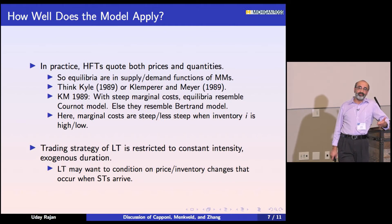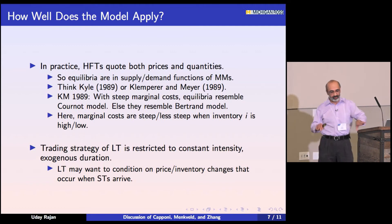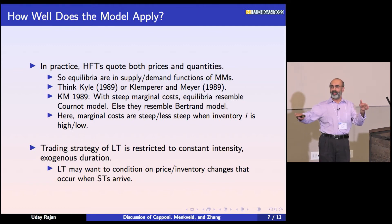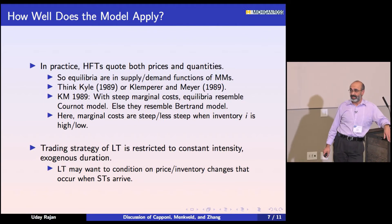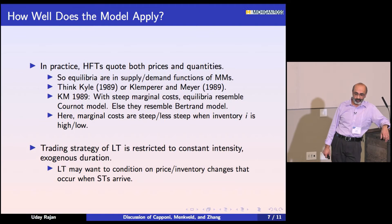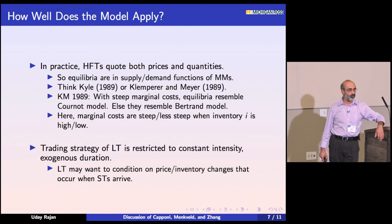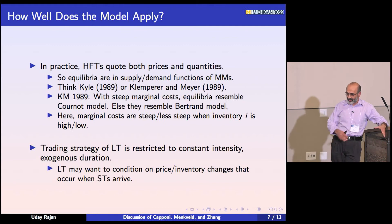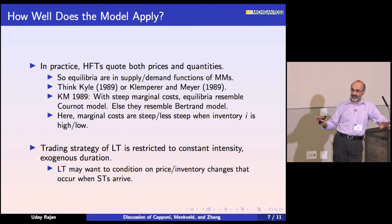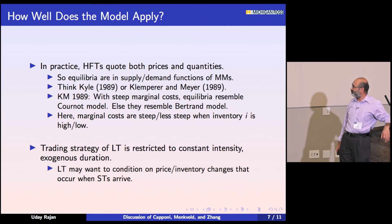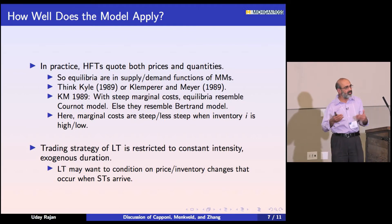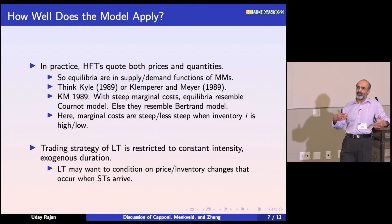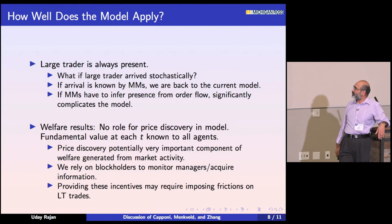The trading strategy of the large trader here is restricted to a fixed duration and a constant flat rate. I'm extremely sympathetic — it was hard to solve this model — and as in many of my own papers, when I start writing I think I'm climbing Mount Everest and when I'm done it looks like I'm crawling on the ground. But it seems that in this case, the large trader should want to condition on prices and inventory changes that occur when some of these small traders show up.